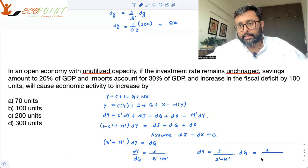What is s dash? s dash is 0.2. What is m dash? m dash is 0.3. Increase in fiscal deficit is 100.